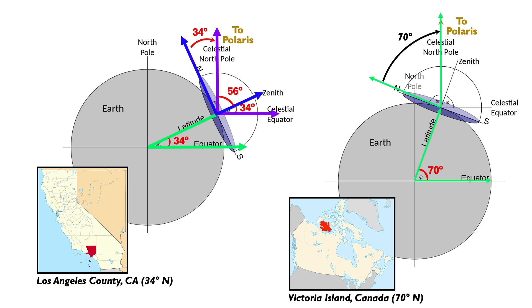With the same geometry that we explored in detail before, we can see that Polaris appears 70 degrees above your horizon on Victoria Island, because your latitude there is 70 degrees.